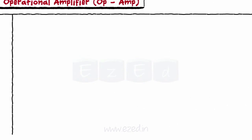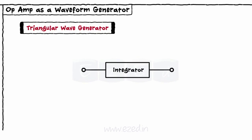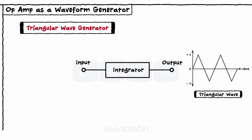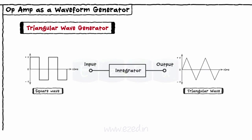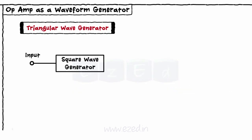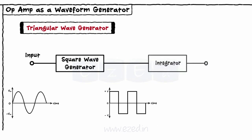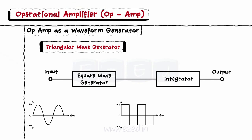For a triangular wave generator: the output of an integrator is a triangular wave when its input is a square wave. So to construct a triangular wave generator, we combine two circuits — a square wave generator followed by an integrator. At the output of the integrator, we get a triangular signal.